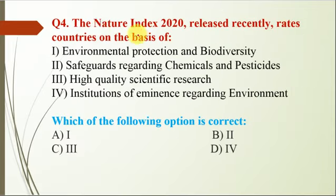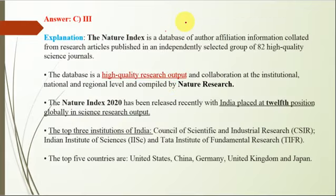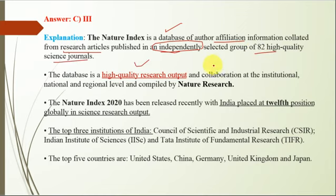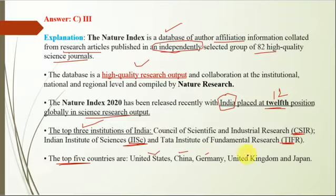Question number 4: the Nature Index 2020, recently released, rates countries on the basis of high quality scientific research. The Nature Index is a database of author affiliation information collated from research articles published in an independently selected group of 82 high quality science journals. India is placed at 12th position globally in science research output. The top three institutions of India are CSIR, IISc, and TIFR. The top five countries are USA, China, Germany, UK, and Japan.